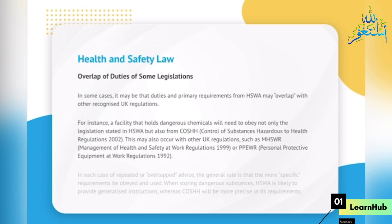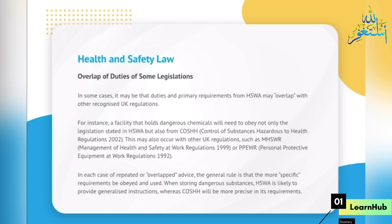Overlap of Duties of Some Legislations. In some cases, duties and primary requirements from HSWA may overlap with other recognised UK regulations. For instance, a facility that holds dangerous chemicals will need to obey not only HSWA but also COSHH, Control of Substances Hazardous to Health Regulations 2002. This may also occur with MHSWR, Management of Health and Safety at Work Regulations 1999, or PPEWR, Personal Protective Equipment at Work Regulations 1992. In each case of overlapping advice, the general rule is that the more specific requirements be obeyed. When storing dangerous substances, HSWA is likely to provide generalised instructions, whereas COSHH will be more precise in its requirements.